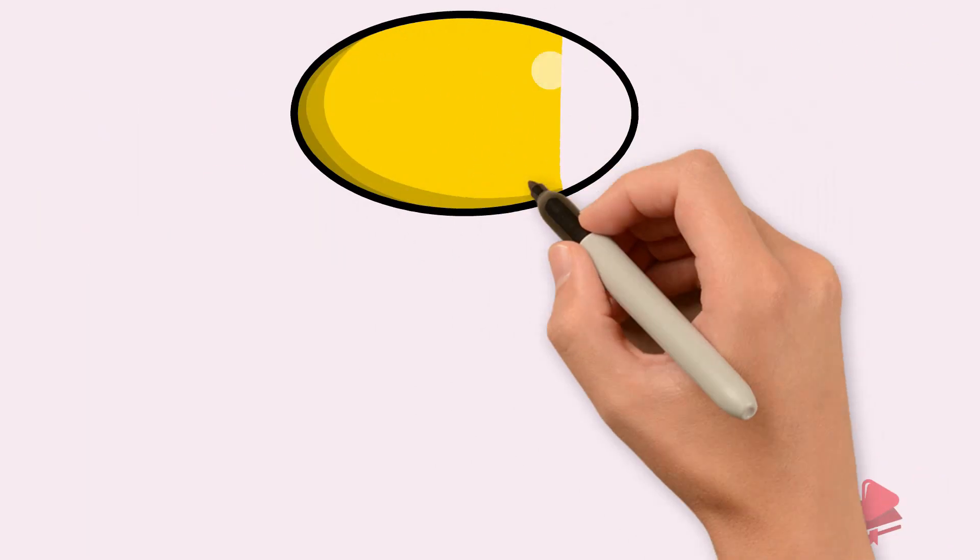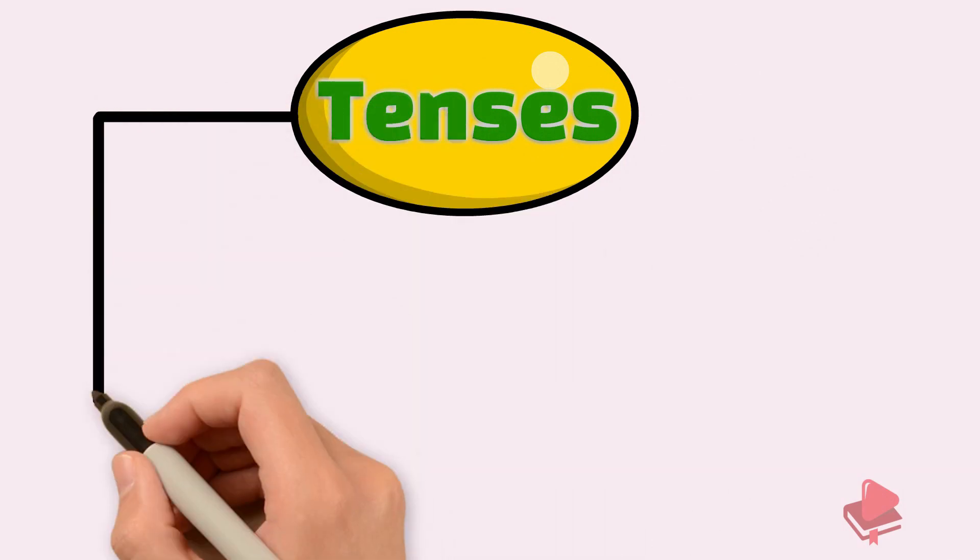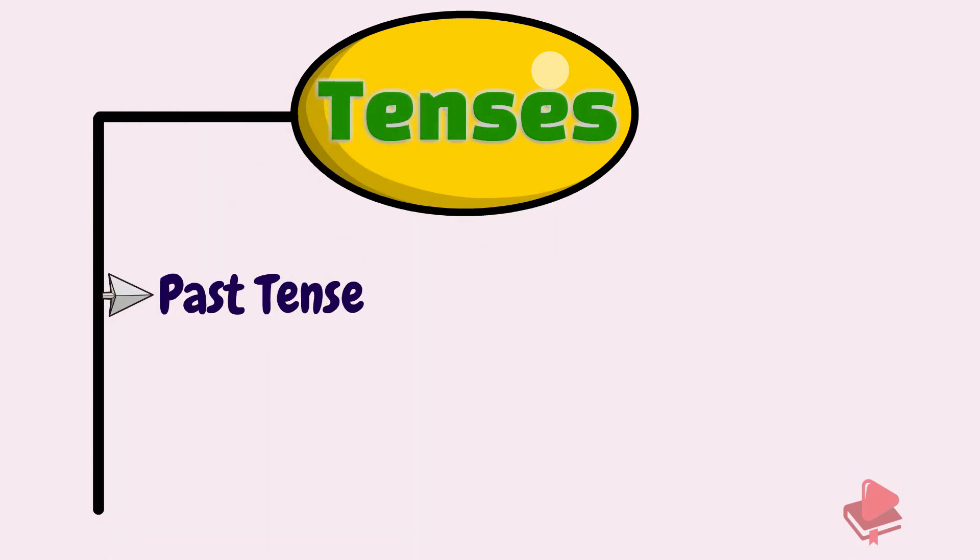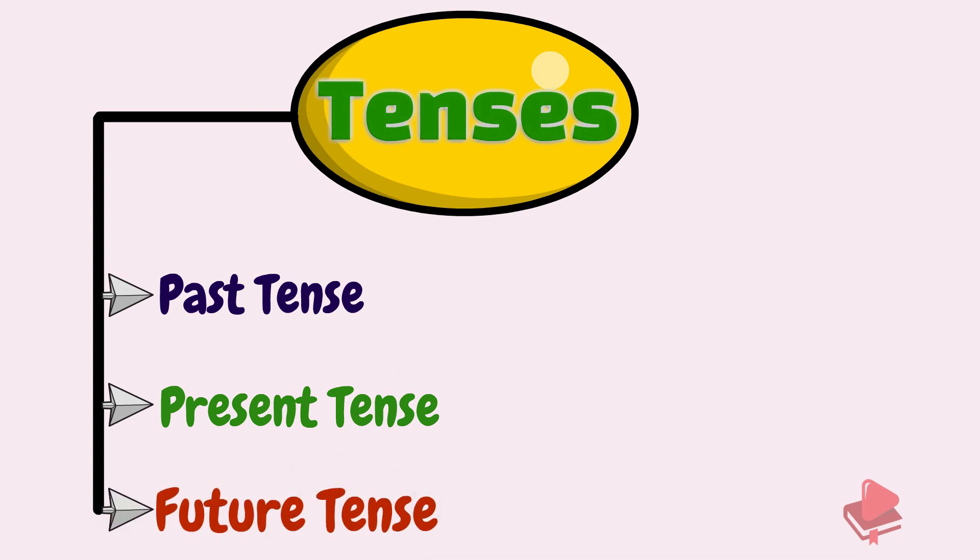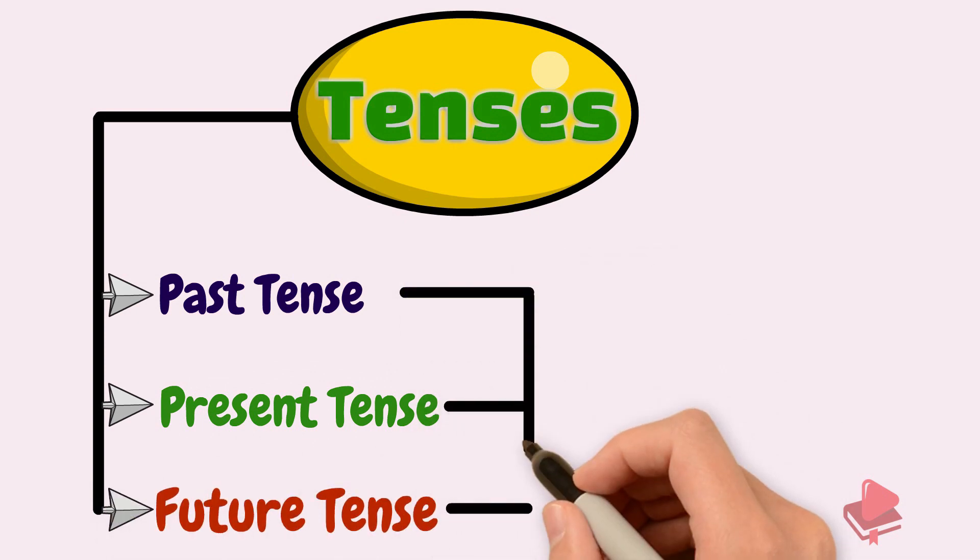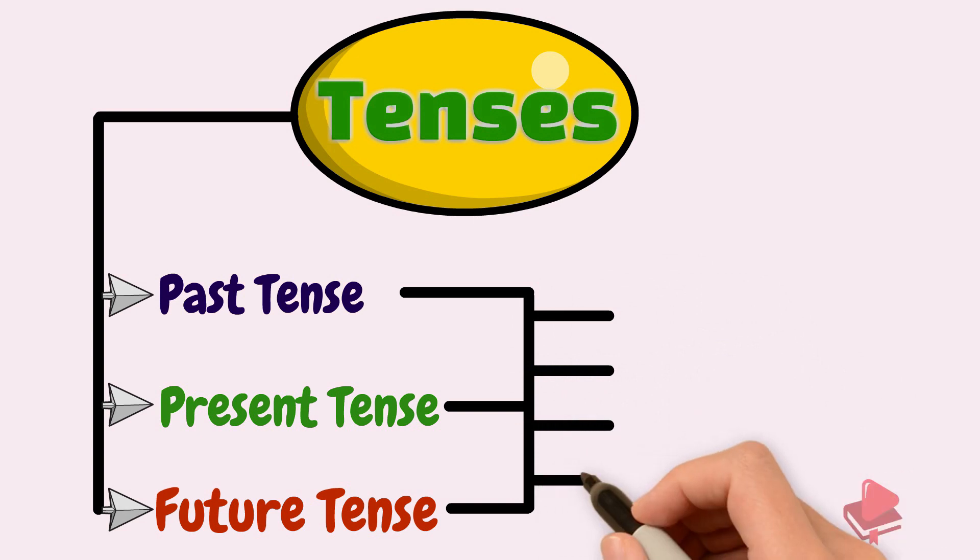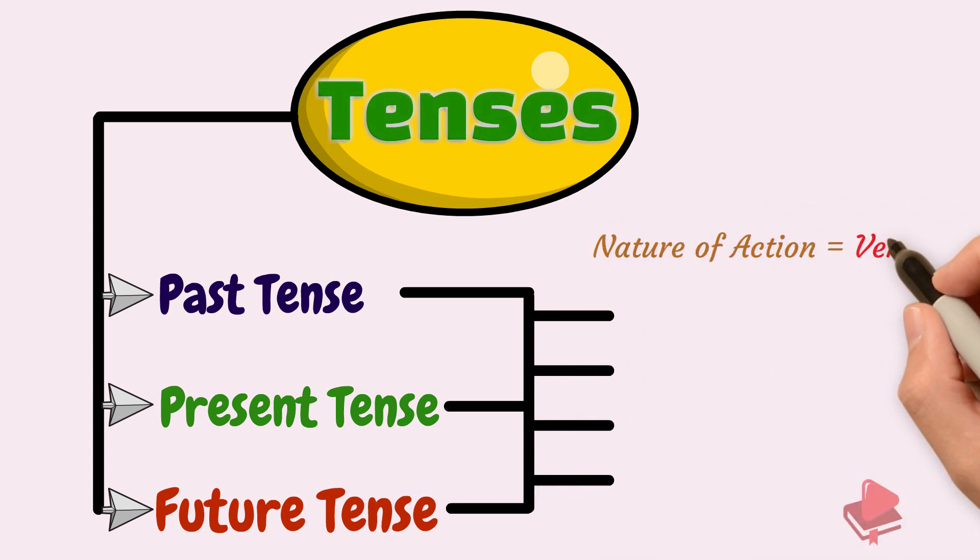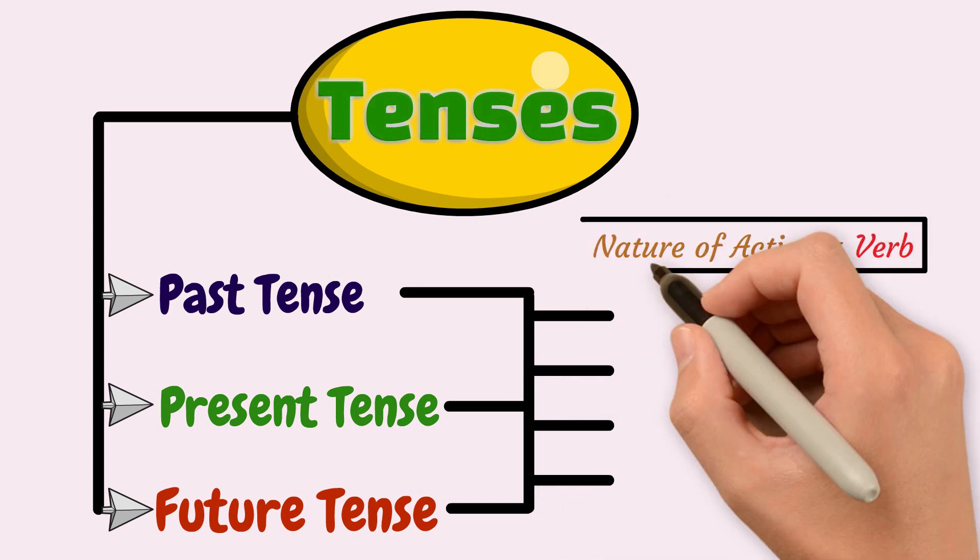Tenses are broadly classified into three categories. That is, past tense, present tense, and future tense. With each of these tenses, there are four aspects associated with it. An aspect here refers to the nature of action performed by the verb.